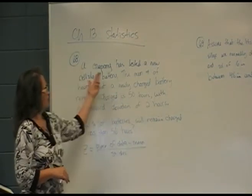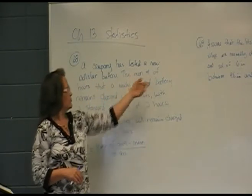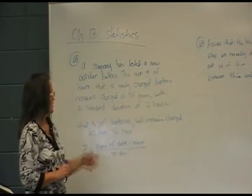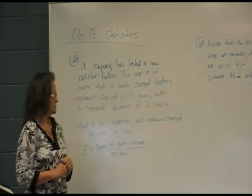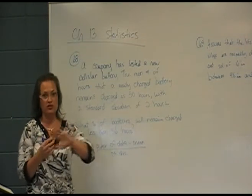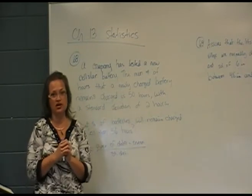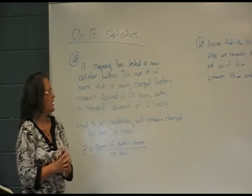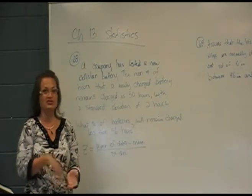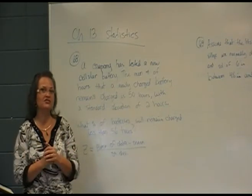On number 68, it says a company has tested a new cellular battery. The mean number of hours that a newly charged battery remains charged is 50 hours with a standard deviation of two hours. Now, you know how this goes, if you have a cell phone, some cell phones the battery is great, will last forever. You may have the outlier that lasts extra long, past what the standard deviation of the mean is, maybe two standard deviations. Or you may have the bad one of the bunch, the one that just won't stay charged, the outlier to the negative side. That's kind of what this chart is about.